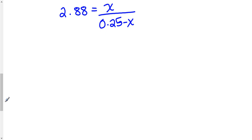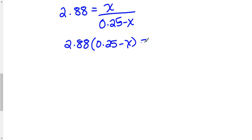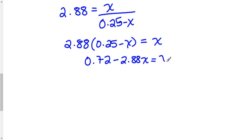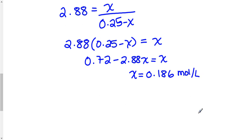To solve, cross-multiply and gather like terms. Being careful not to round too early — significant digits matter at the end — x works out to approximately 0.186. Remember x represents our change in concentration, so it technically has units of moles per liter. But we're not done yet: the question asks for all concentrations at equilibrium, not just x.